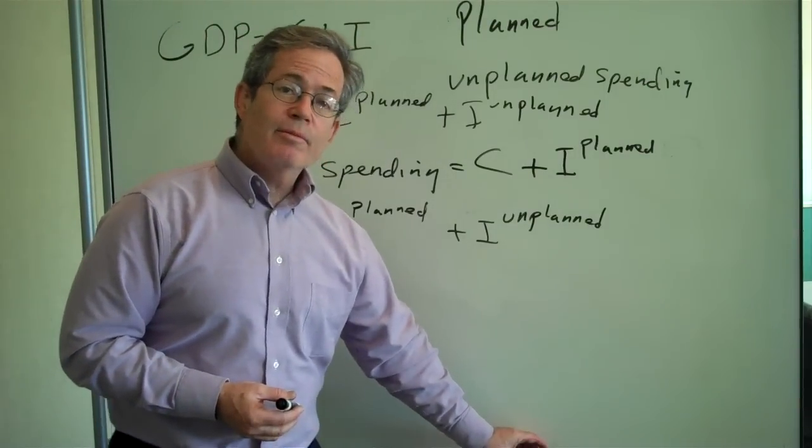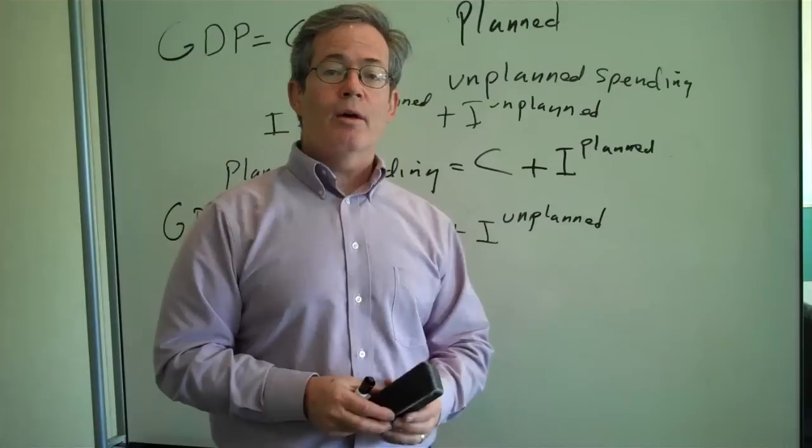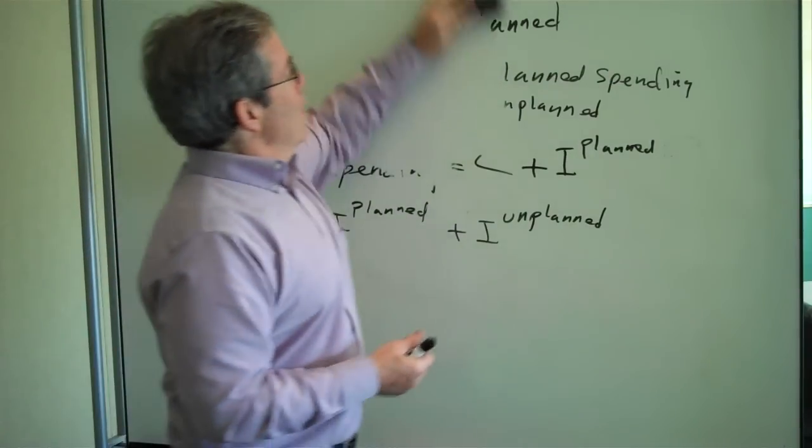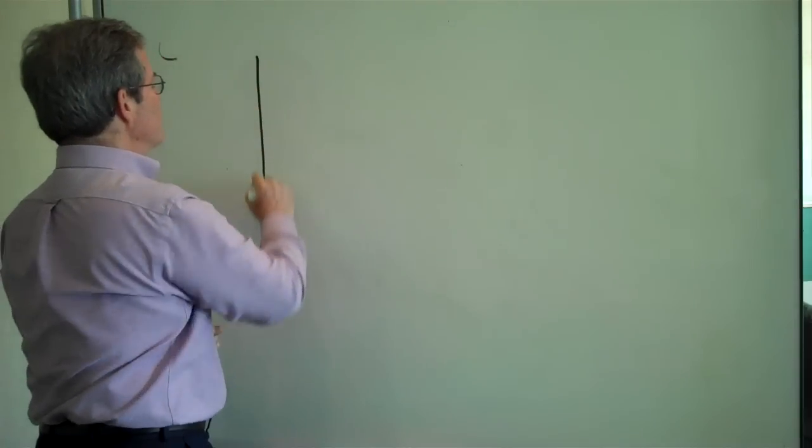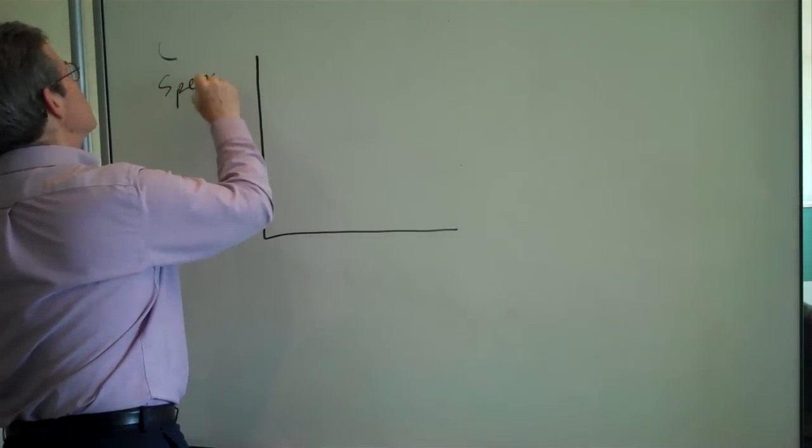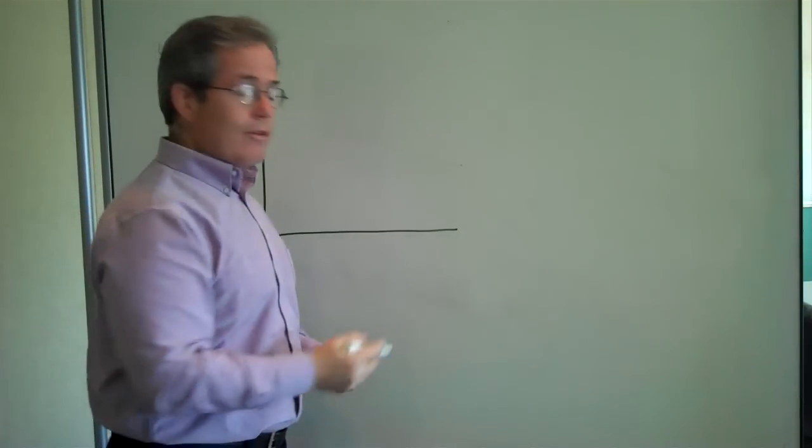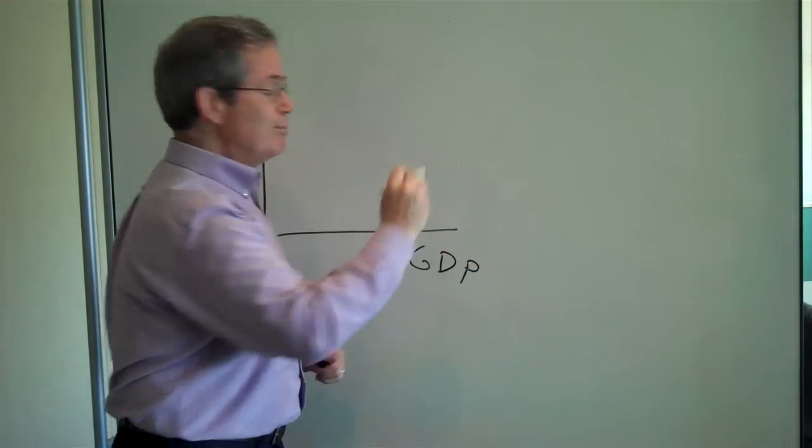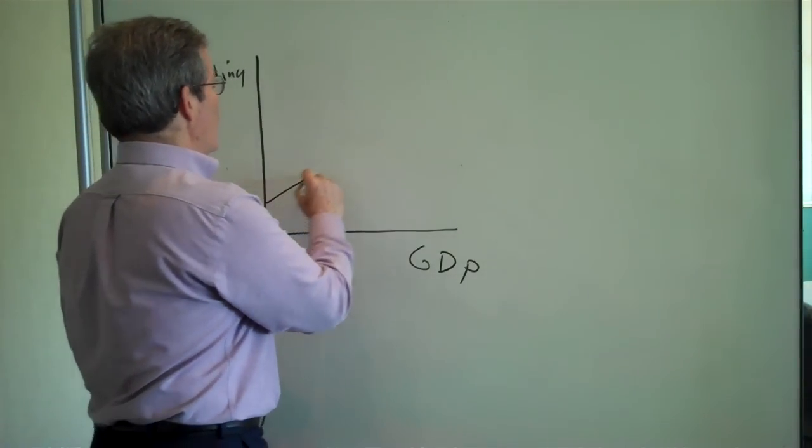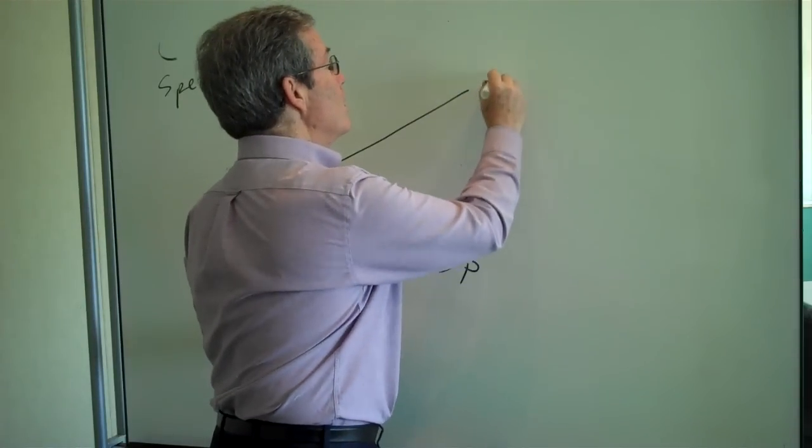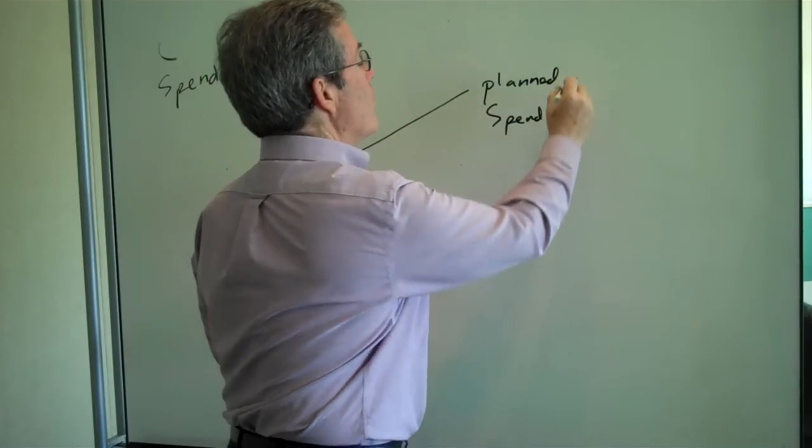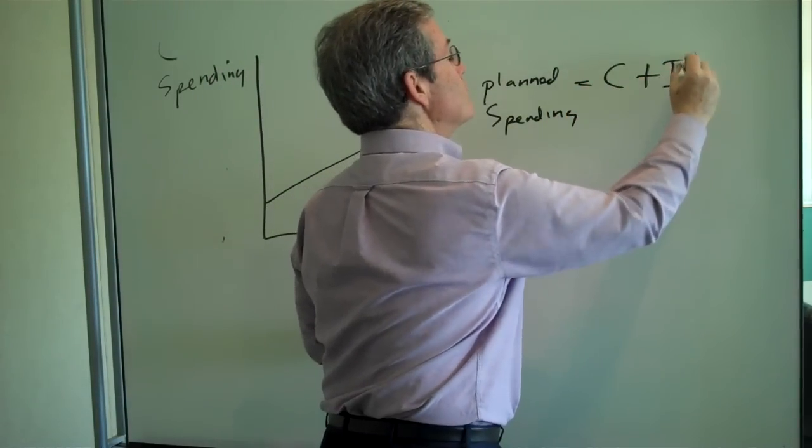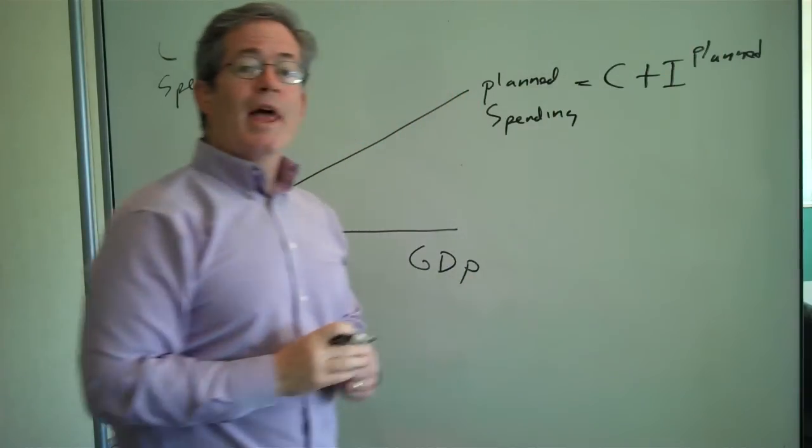Now we're going to graph this and it's the graph that we're going to use in talking about our income expenditure model. So let's put on the vertical axis spending and on the horizontal axis we'll put GDP. And this line is planned spending which is equal to consumption plus planned investment.